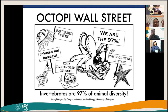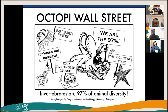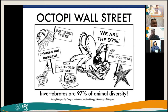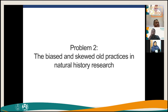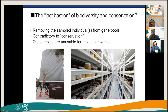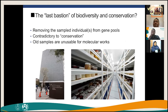When we want to conserve important fishery species, we must also conserve the complete ecosystem to support those species. However, there are biases and skewed practices in natural history research — for example, when you collect many animals from the field and kill them, you are removing them from the gene pool, so you are not actually doing conservation.